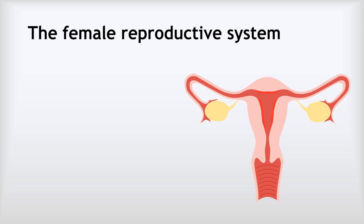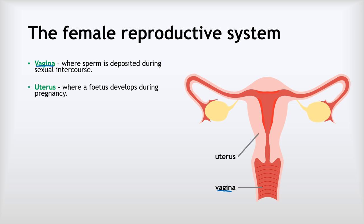We're going to look now at the structure of the female reproductive system. This is super important because the whole of the rest of the video really depends on this knowledge. If we start at the bottom of the diagram, we have the vagina — this is where sperm is deposited during sexual intercourse. Next, we have the uterus, this region up here.